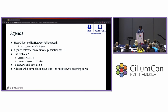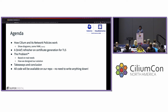The agenda for today: we're going to show how Cilium and network policies work. We're going to have some diagrams, a little bit of YAML, a brief refresher on certificate generation for TLS, and then we're going to talk about the problem — it's based on real needs and how we at Superorbital designed our solution using all of the topics we'll cover. Then we'll go to our takeaways and conclusions. Any code you see here don't worry about writing down, because it's all going to be available in the repo I'll show you at the end.